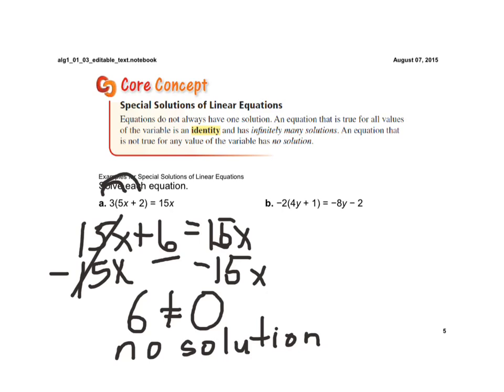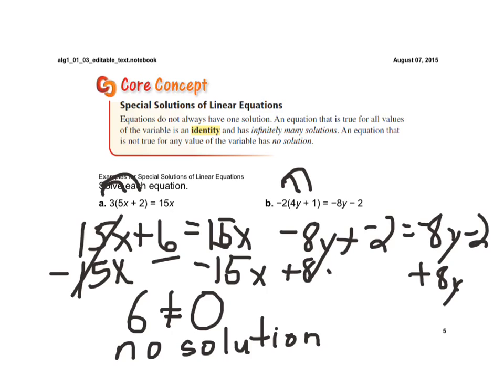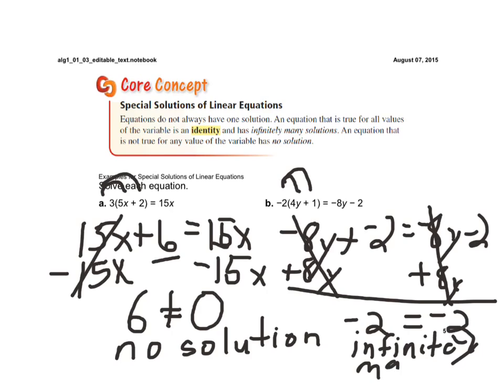Now, if we look at example B, again, we have to use the distributive property. I'm going to distribute through the negative 2. Negative 2 times 4y is negative 8y, plus negative 2 times 1 is negative 2, equals negative 8y minus 2. I have variables on both sides, so I'm going to move the variables to the left by adding 8y to each side. If I do this, those eliminate, leaves me negative 2 on the left side. These eliminate and leave me just negative 2 on the right side. We have no variable terms, the variable terms eliminated. But this time, I'm left with a true statement. Negative 2 does equal negative 2. This represents an identity, and this equation has what we call infinitely many solutions.